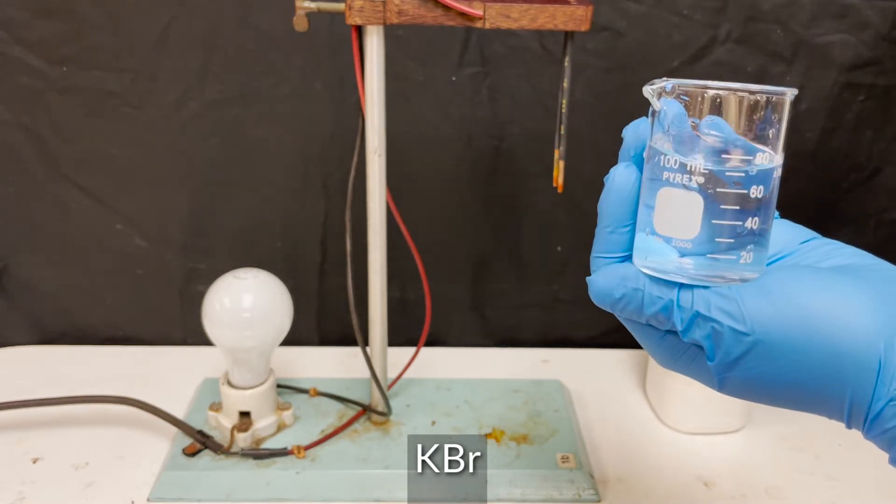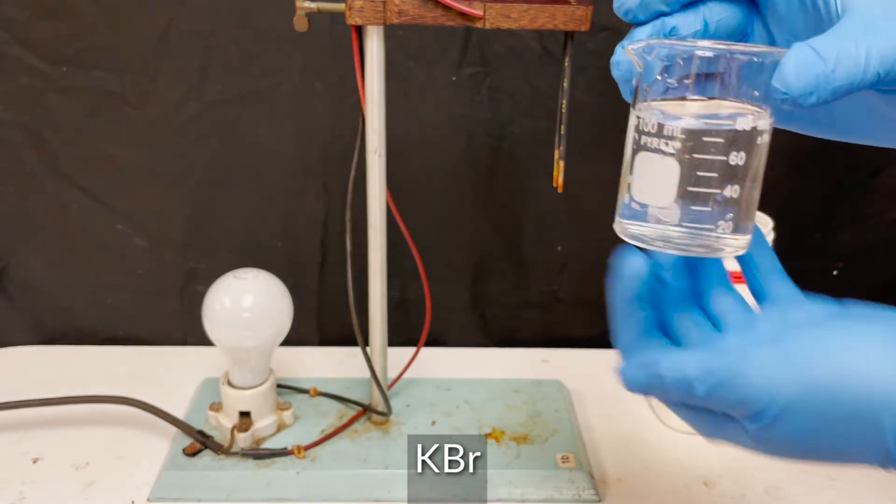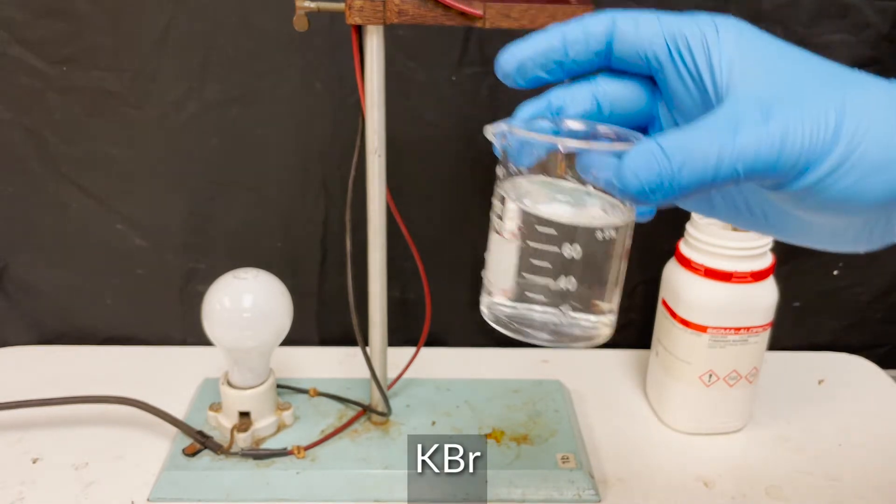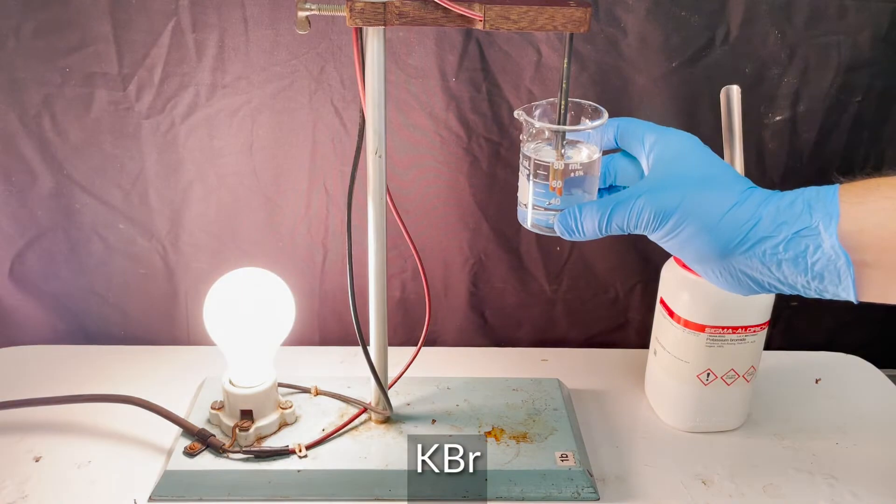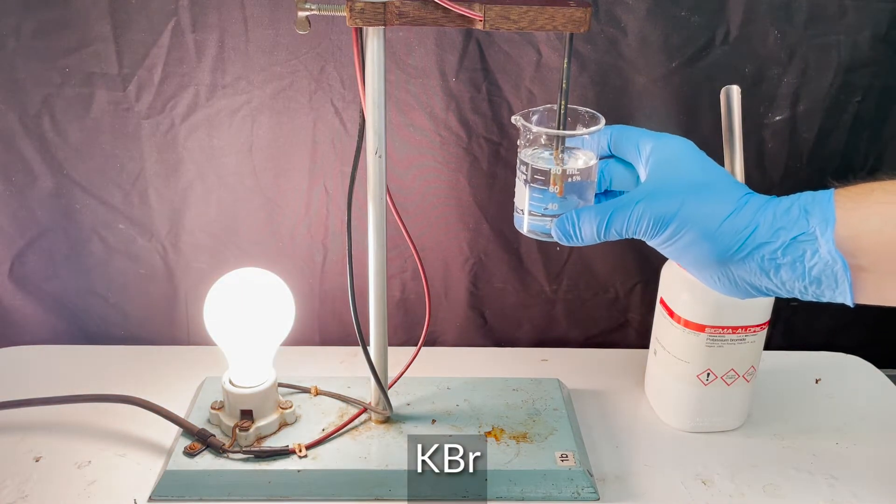As expected from solubility rules, potassium bromide dissolves pretty easily, and we can see that the solution is clear. This ionic compound dissociates and conducts electricity.